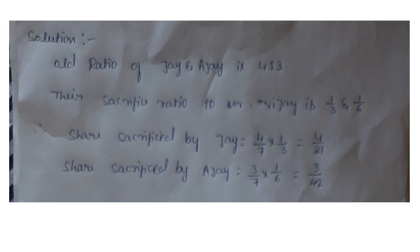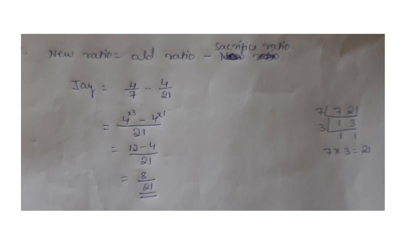Ajay's sacrifice ratio: based on old ratio 3/7, Ajay sacrifices 1/6th. So Ajay's sacrifice is: 3/7 × 1/6 = 3/42. The new ratio formula is: New Ratio = Old Ratio − Sacrifice Ratio.